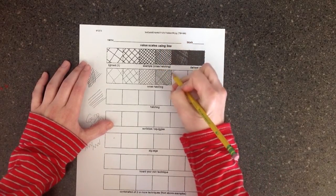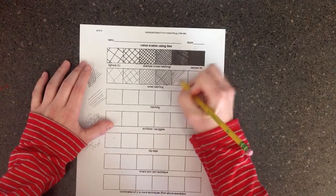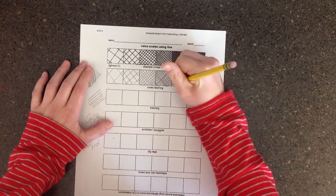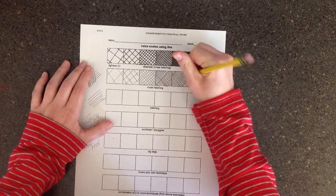Another thing to keep in mind is if you want to get your value darker, you can do another layer on top. So the more layers you have, the darker your value will seem.